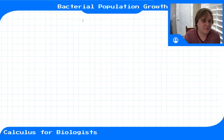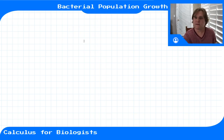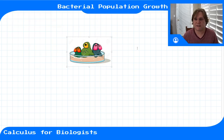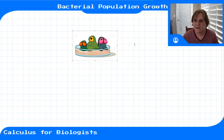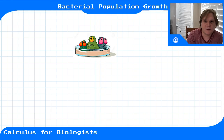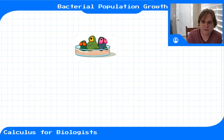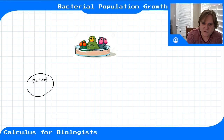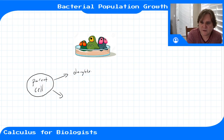In this video we'll talk about a model for general bacterial population growth. Let's say we have a classic petri dish full of bacteria and we want to think about how this population is growing. Each bacterial cell — a parent cell — is going to split into two daughter cells.